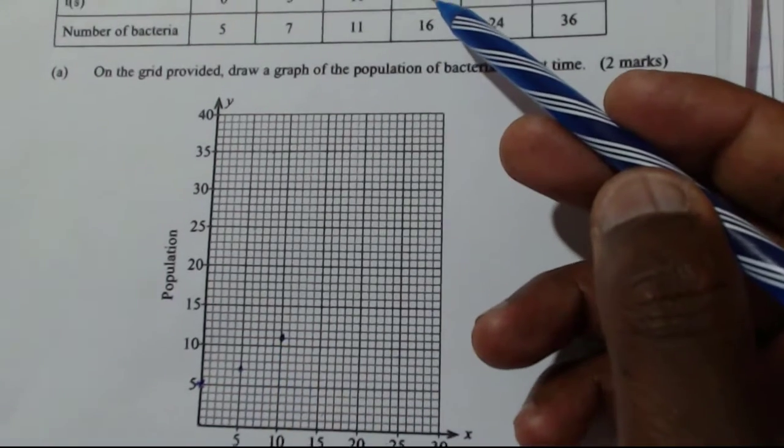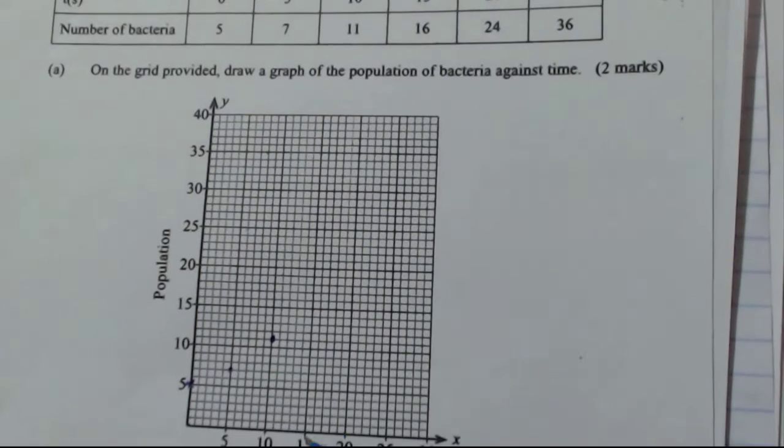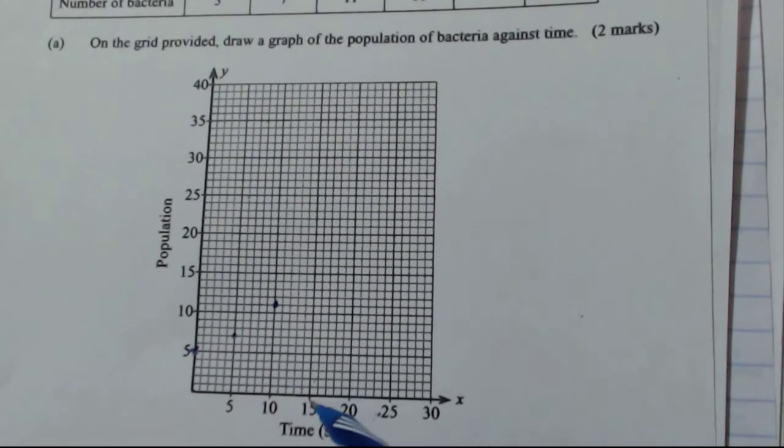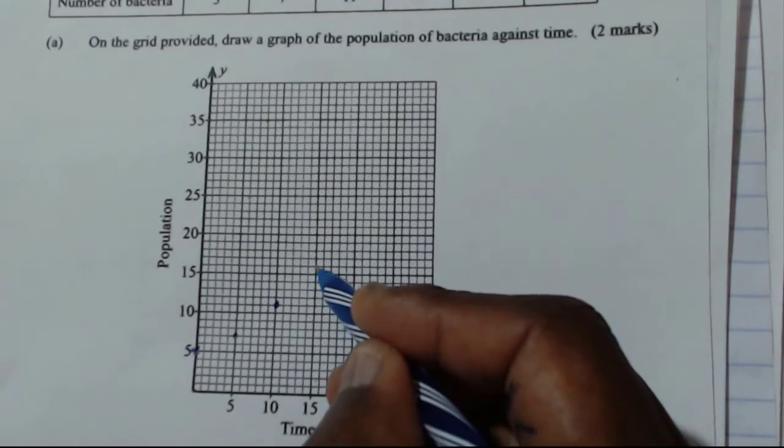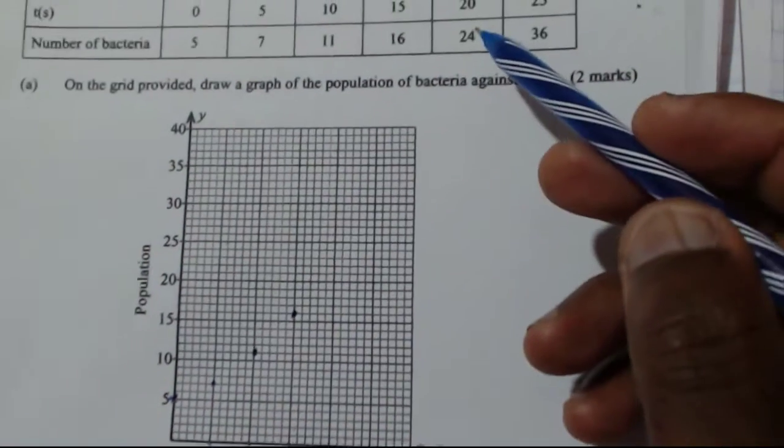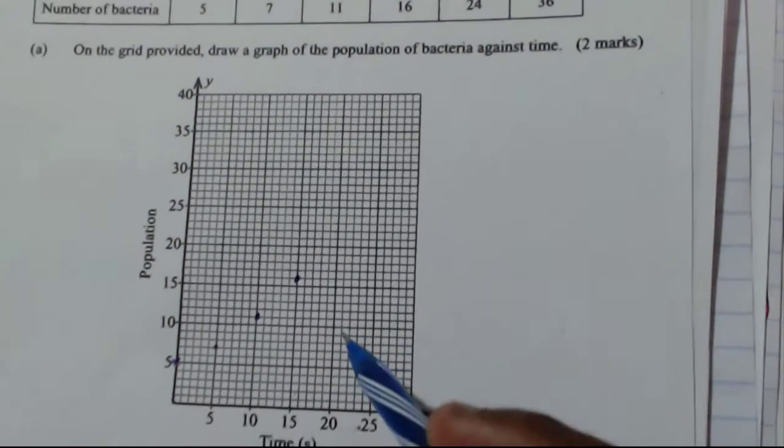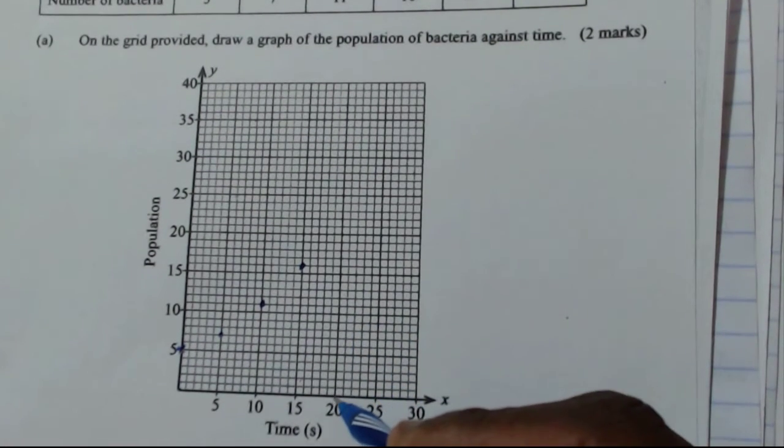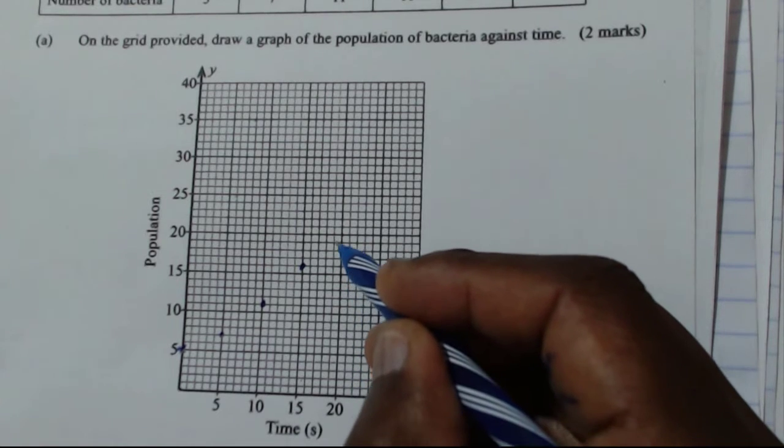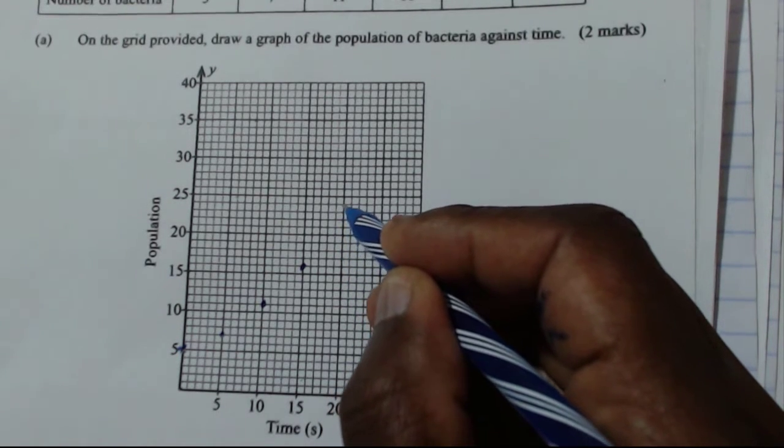Then 15, the next one is 15, 16. So 15, 16, you have 15, then 16 is here. Then the other one is 20, 24. So you have 20 here, then you go up to where you have 24. And this is 24 here.